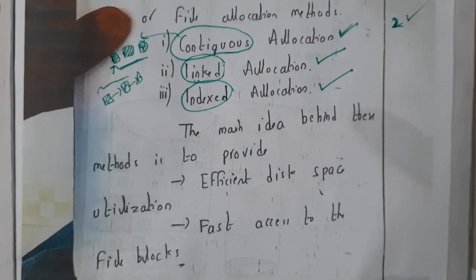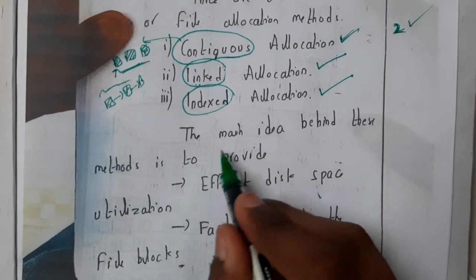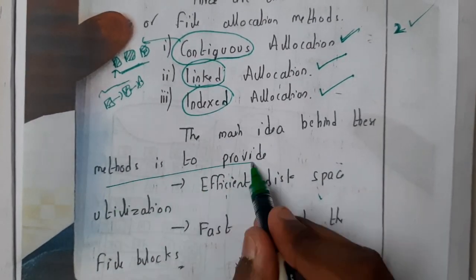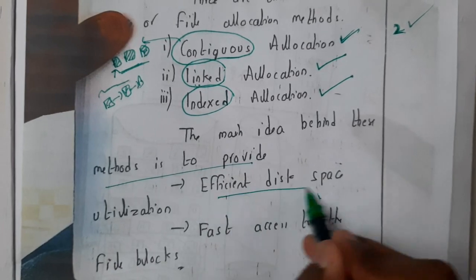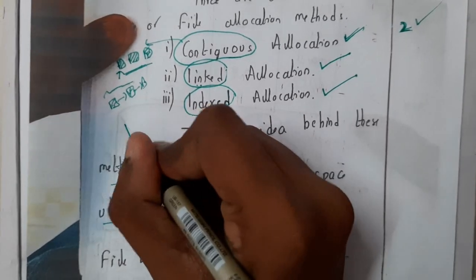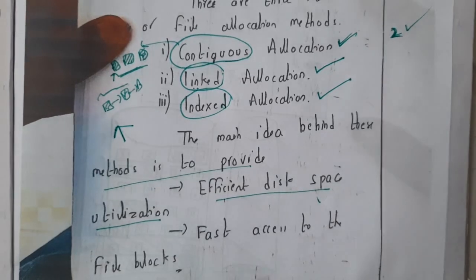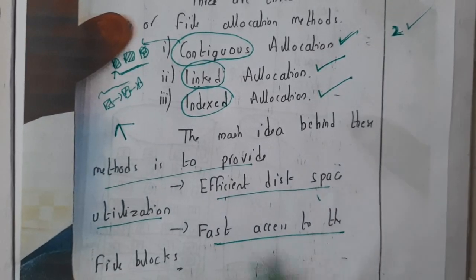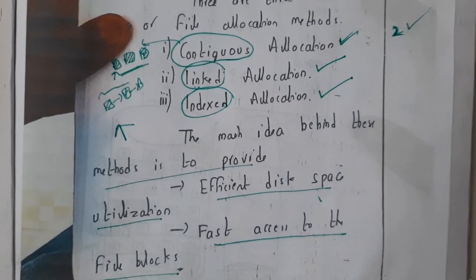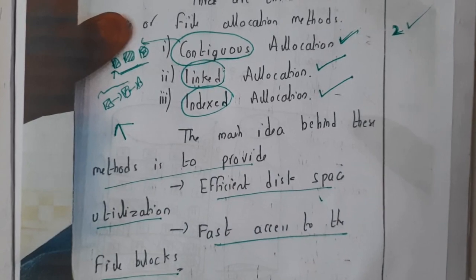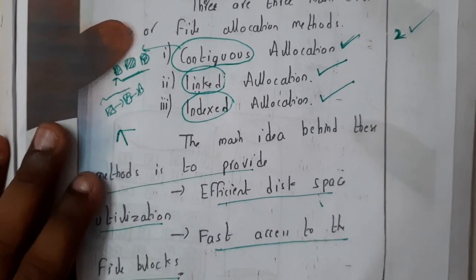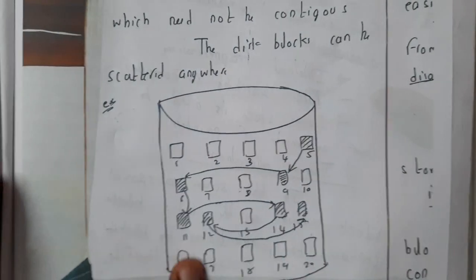We will be discussing with examples, don't worry. The main idea behind these methods is to provide efficient disk space utilization - to utilize the space maximum - and to provide fast access of the file blocks. We will be using these file allocation algorithms or methods. Now let us go through the first method.